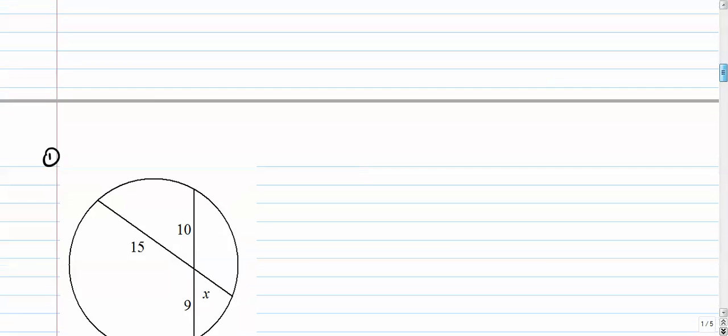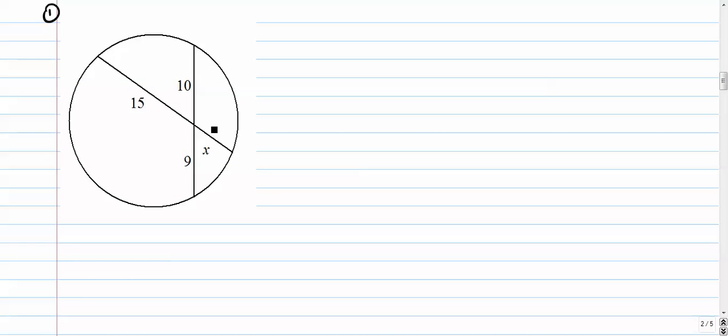Number one: Here we have chords intersecting at this point. We have 10 times 9 equals 15 times X. 10 times 9 is 90 equals 15X, so X equals 6. You can plug that back in and check if you'd like. 15 times 6 is 90, and 10 times 9 is 90.